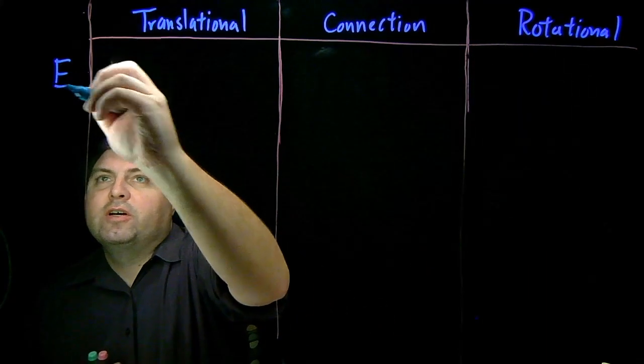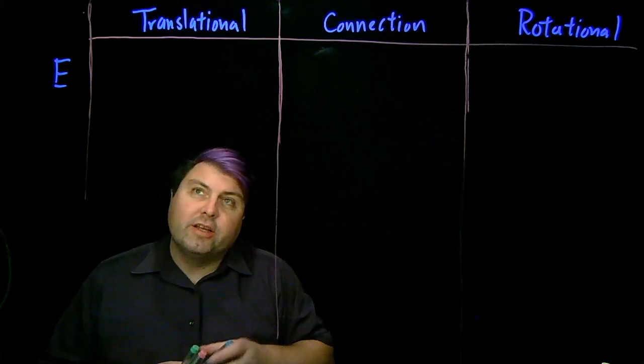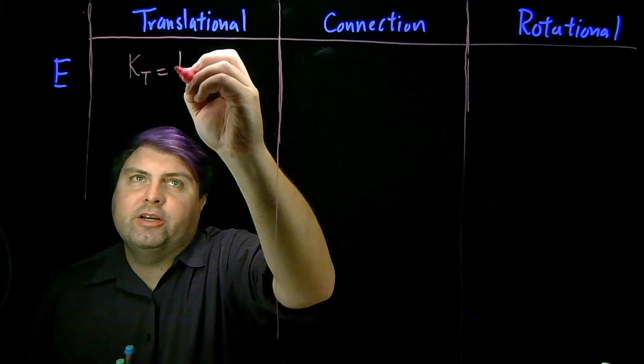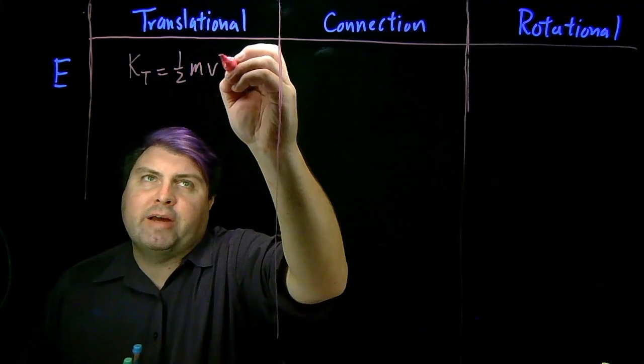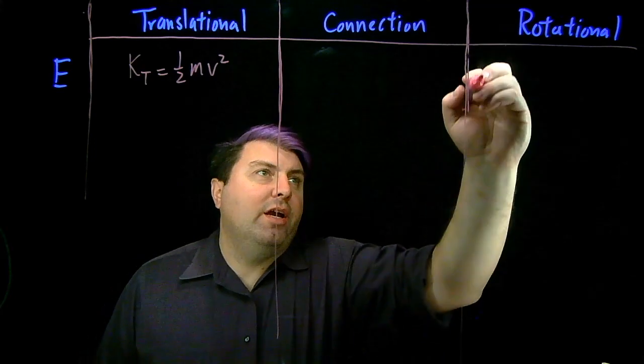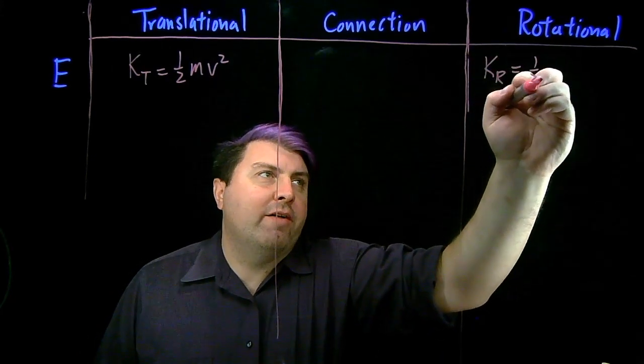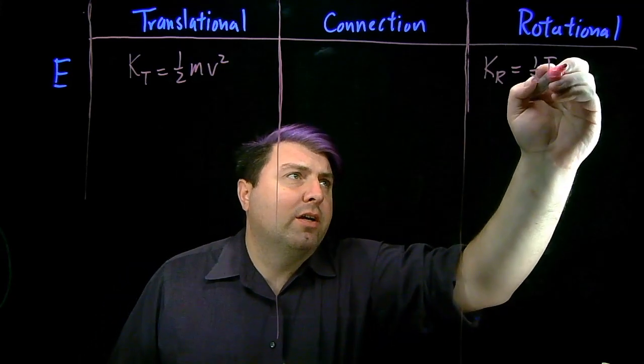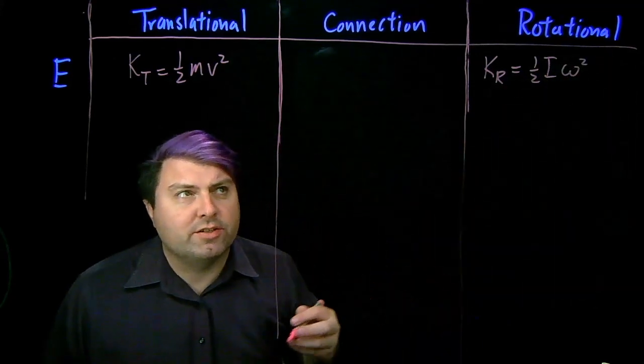So if we're talking about energy, then for translational we have that our translational kinetic energy is one-half the translational mass times the translational velocity squared. For rotational, our kinetic energy of rotational is one-half times the rotational mass, also known as the moment of inertia, times the rotational velocity squared.